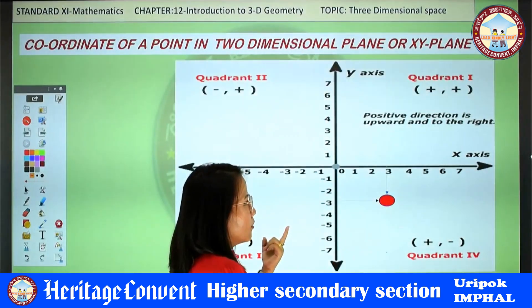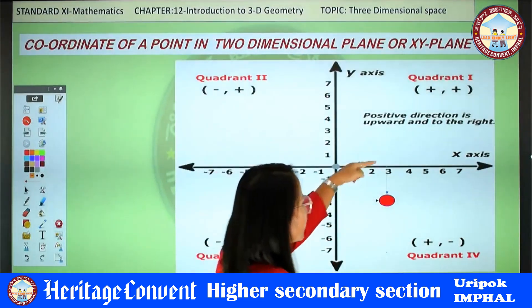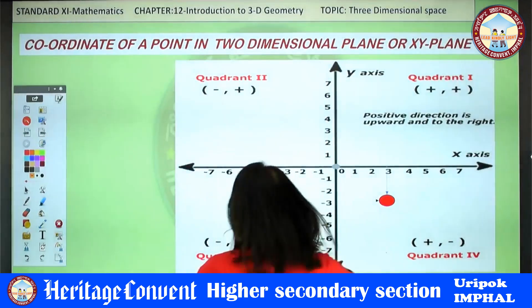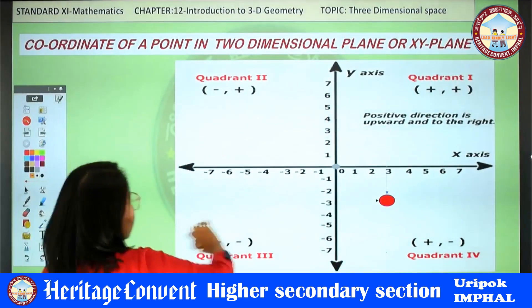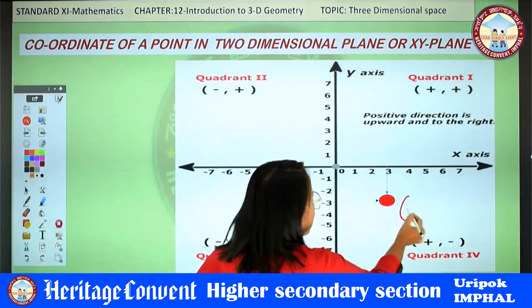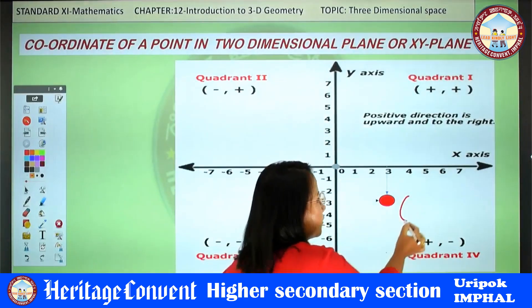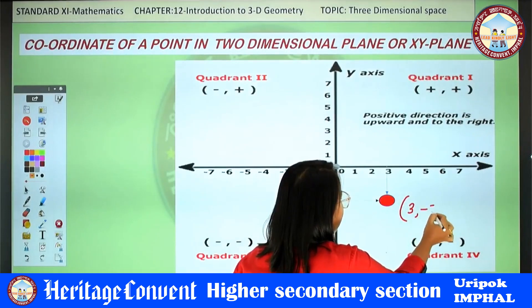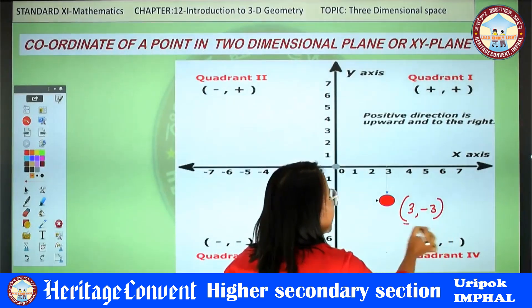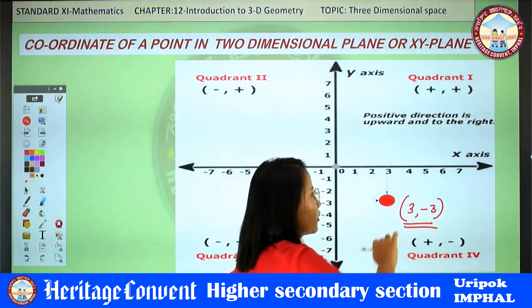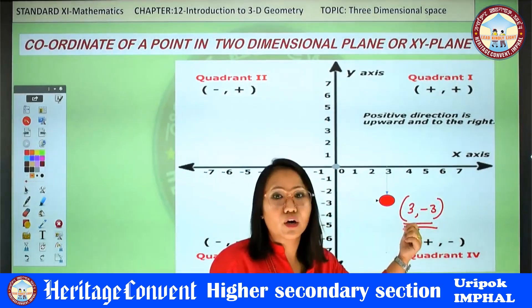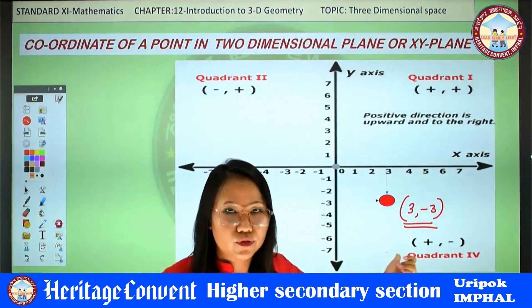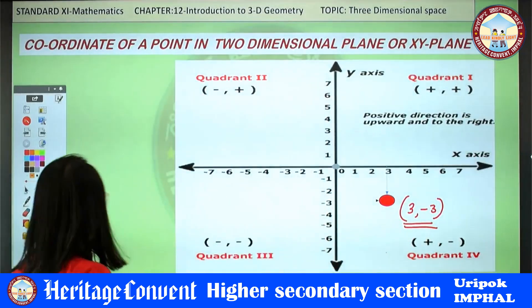For example, from a graph, measuring distance from the Y-axis and the X-axis, I can say a point is at coordinates (3, -3). This is how we find the position of a point in two dimensions using a coordinate system. Now let's move on to three dimensions.